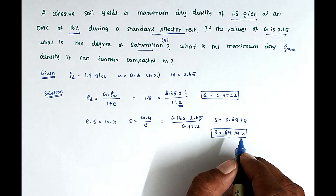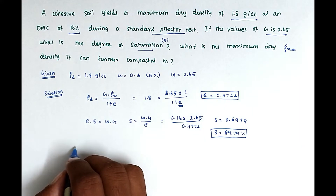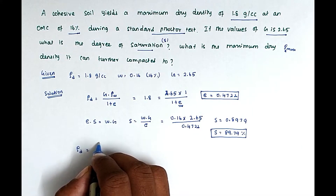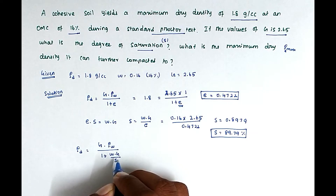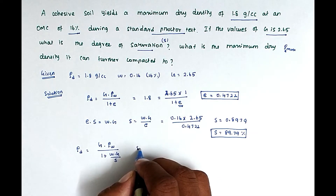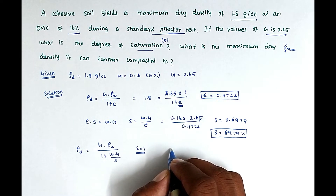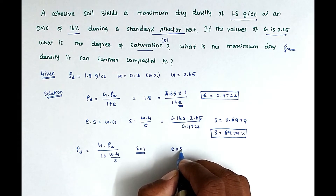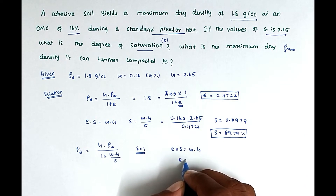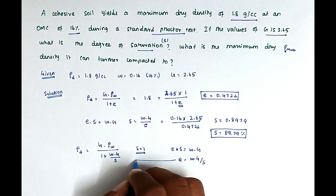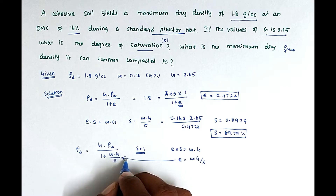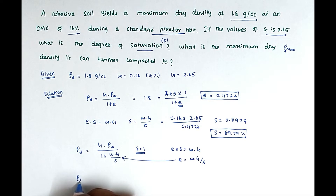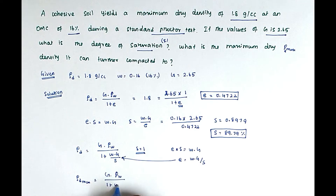After that we have to find out the maximum dry density it can be further compacted to. The formula is ρD = G·ρw / (1 + W·G/S). For maximum compaction, S = 1 (fully saturated condition), so the formula becomes ρD_max = G·ρw / (1 + W·G).